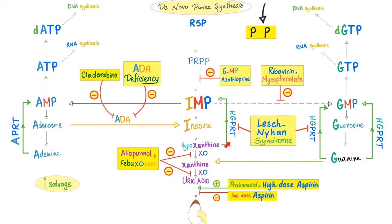When you cannot salvage the purines, what happens? They will be degraded — leading to hyperuricemia and maybe gout. Remember xanthine oxidase? You can inhibit it with drugs such as allopurinol and febuxostat. Febuxostat — XO for xanthine oxidase and stat for inhibition — inhibits xanthine oxidase.